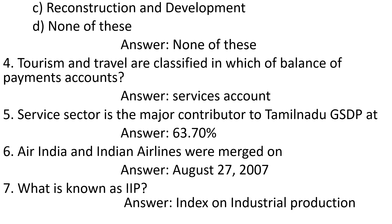Question 4: Tourism and travel are classified in which of balance of payments accounts. Answer: Services account. Question 5: Service sector is the major contributor to Tamil Nadu GSDP at. Answer: 63.70%.